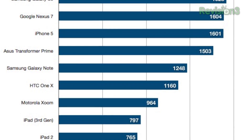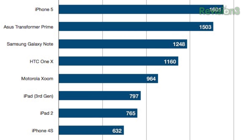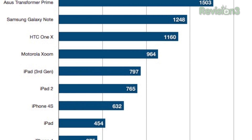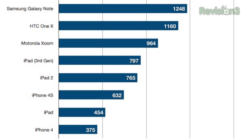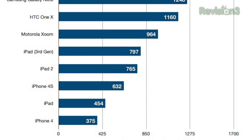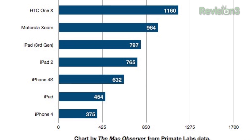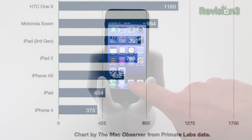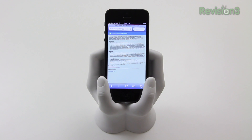The overall Geekbench score, believe it or not, is faster than all of the devices listed here. You had the Galaxy S3 at the top, and the iPhone 4S only scoring a 632. So this is a fast phone — you don't have to worry about that, at least in Geekbench terms.